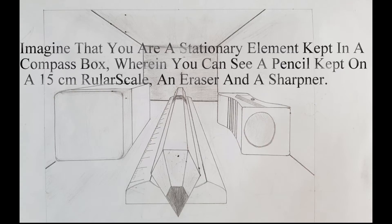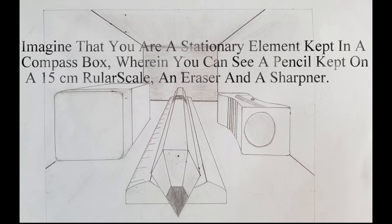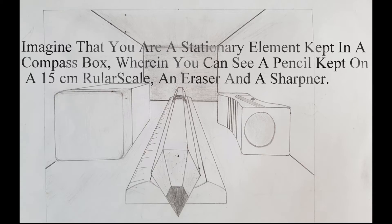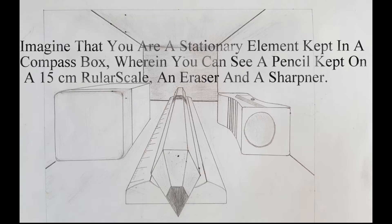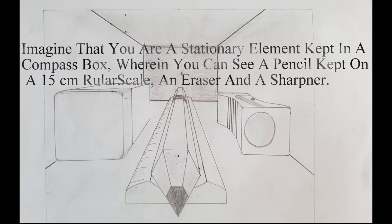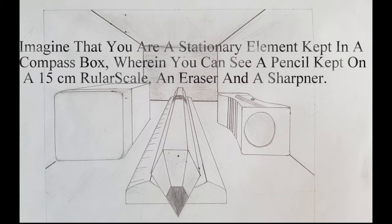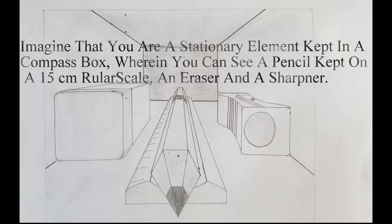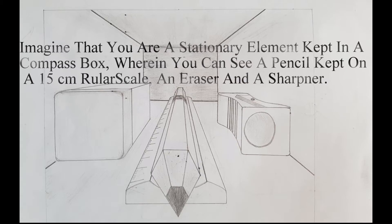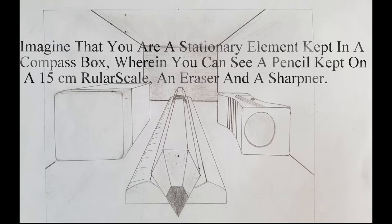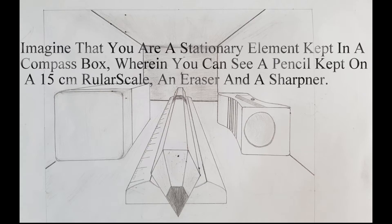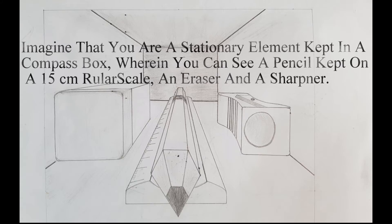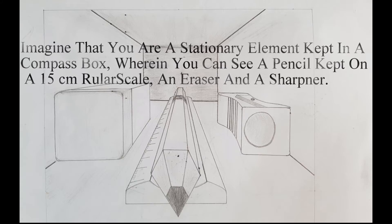The second example for this topic is as follows. Imagine that you are a stationary element kept in the compass box, wherein you can see a pencil kept on a 15 cm ruler scale, an eraser and a sharpener. Draw one point perspective as it will appear through your imagination.